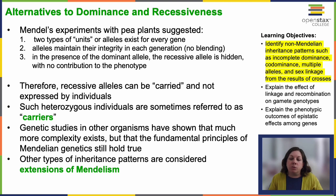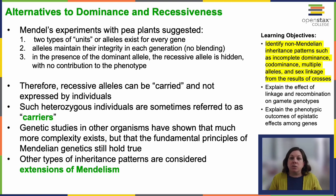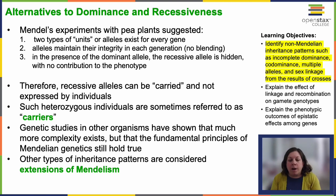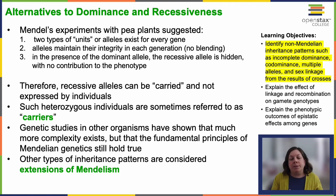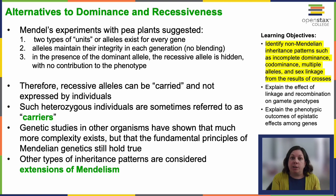Genetic studies in other organisms have shown that much more complexity actually exists, but the fundamental principles of Mendelian genetics still hold true. There are some exceptions and extensions. Other types of inheritance patterns are considered extensions of Mendelian genetics. Think of it as the foundation — Mendelian genetics holds strong — and from there we can build upon it for some other examples.